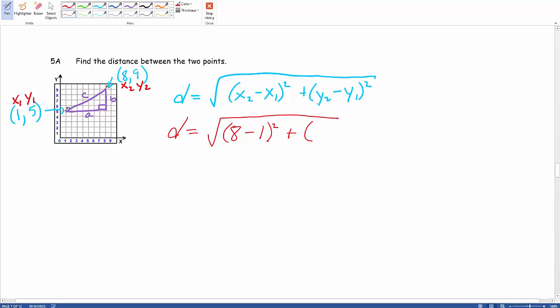...plus our y2 is 9 minus our y1 is 5. And again, this is also being squared.